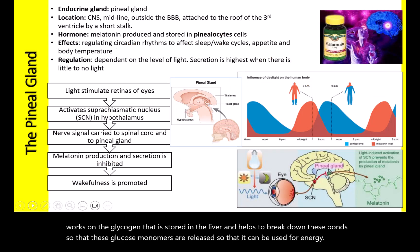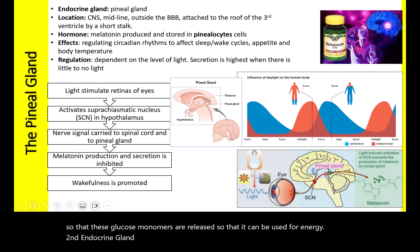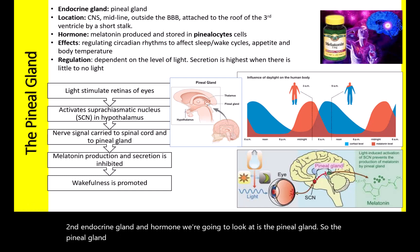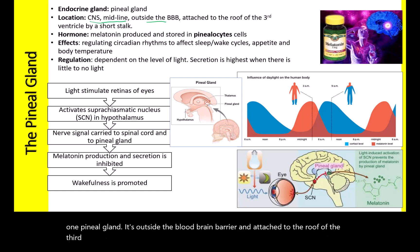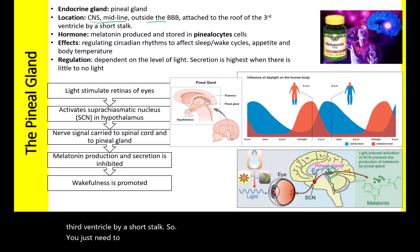The second endocrine gland and hormone we're going to look at is the pineal gland. The pineal gland is located in the central nervous system, in the middle. We only have one pineal gland. It's outside the blood-brain barrier and attached to the roof of the third ventricle by a short stalk.